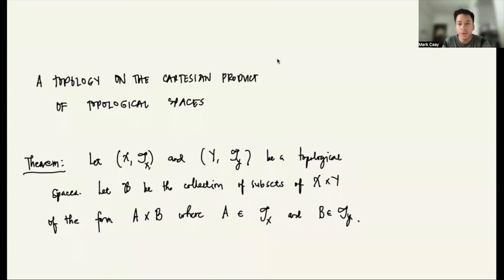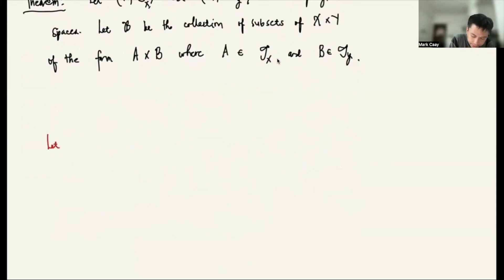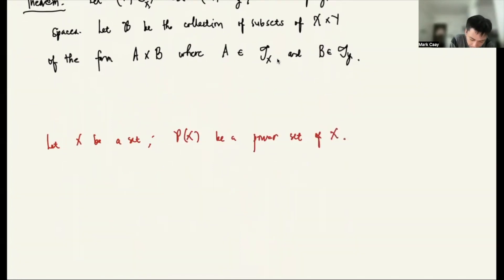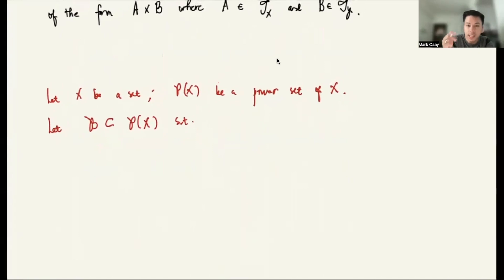Before we start with our discussion, let us recall first. Say you have X, a set. This denotes the power set of X. We let script B be a subset of the power set of X such that certain conditions hold. Number one: the empty set is in B.